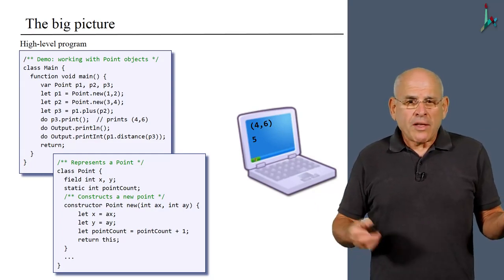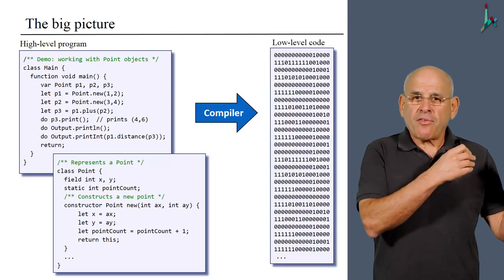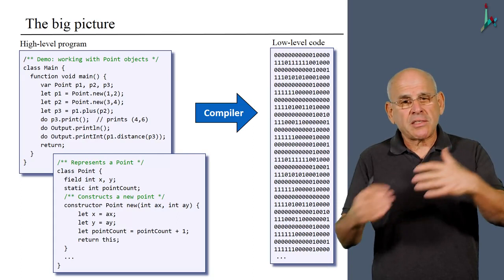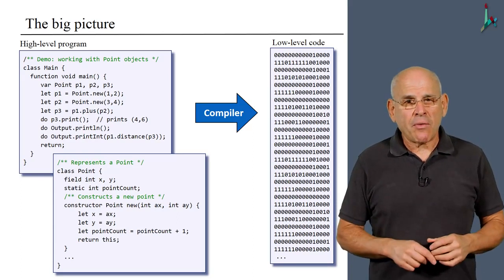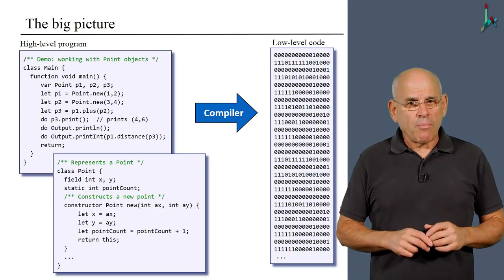So how do we do it? Well, you know the answer. We need a compiler. We need to translate from Jack, in this case, to the Hack machine language or to any other machine language. So we need to write this compiler. So already now, we have a major problem.